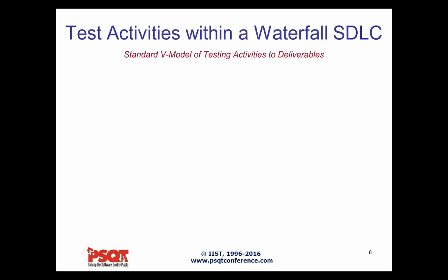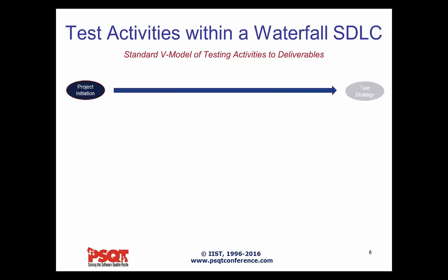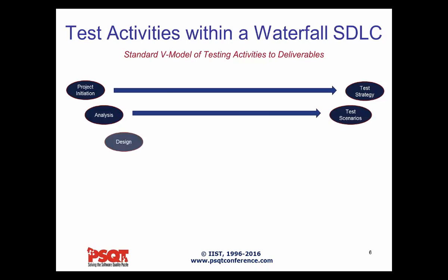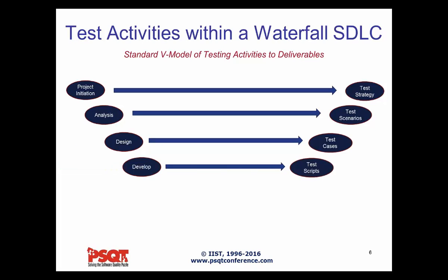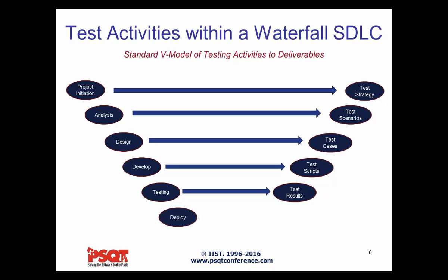For those still doing Waterfall SDLC, here's a standard V-model overview. Project initiation maps to your test strategy. During analysis, you produce test scenarios. In the design phase, you create higher-level test cases and detailed test scripts. During development and testing, you get test results and map them to defects — what passed, what failed. Finally, during deployment, you produce a test summary. These are vanilla activities for each stage of your lifecycle.